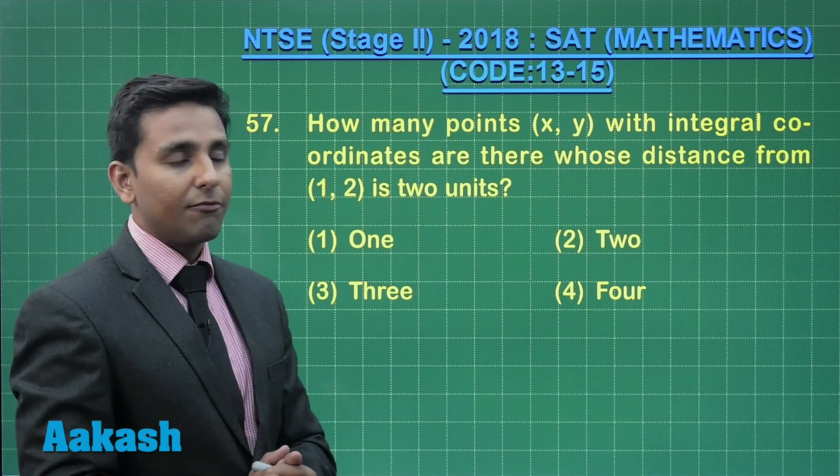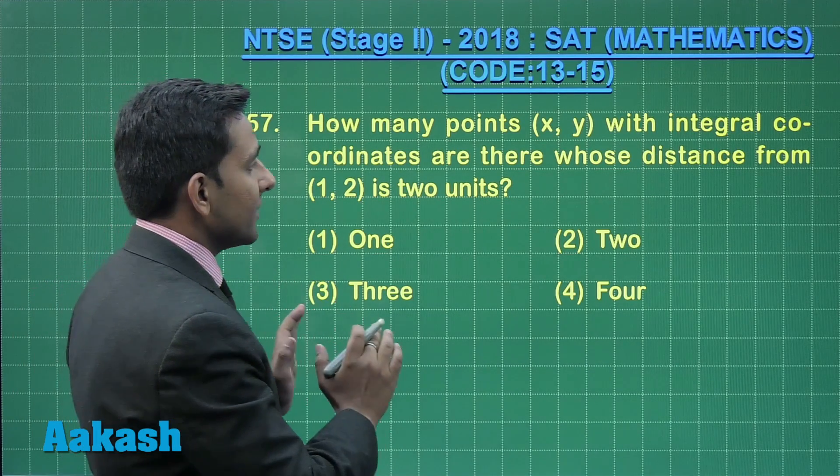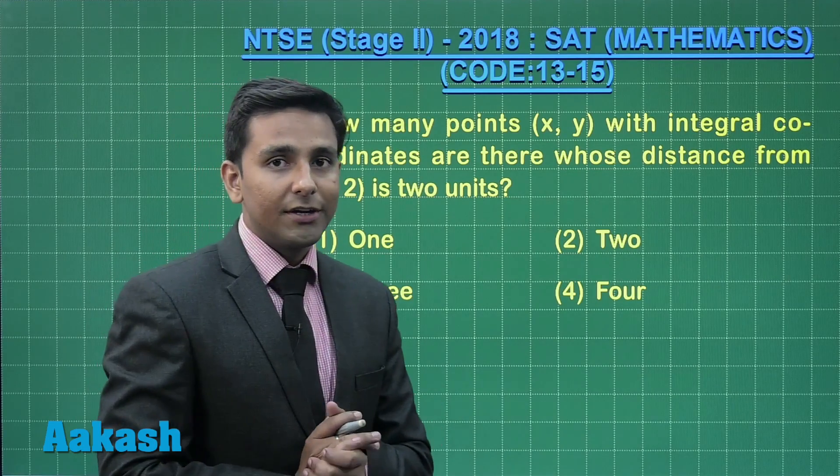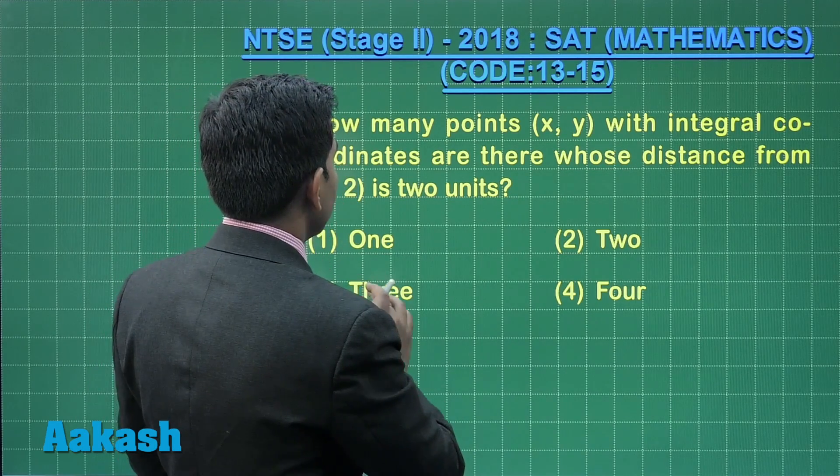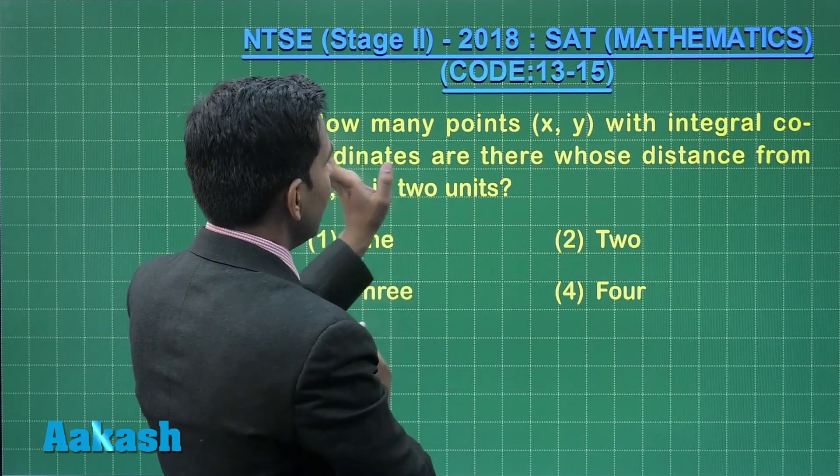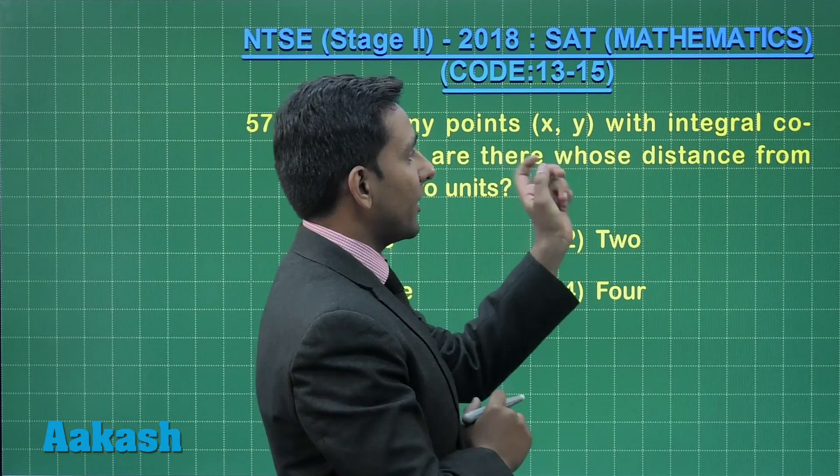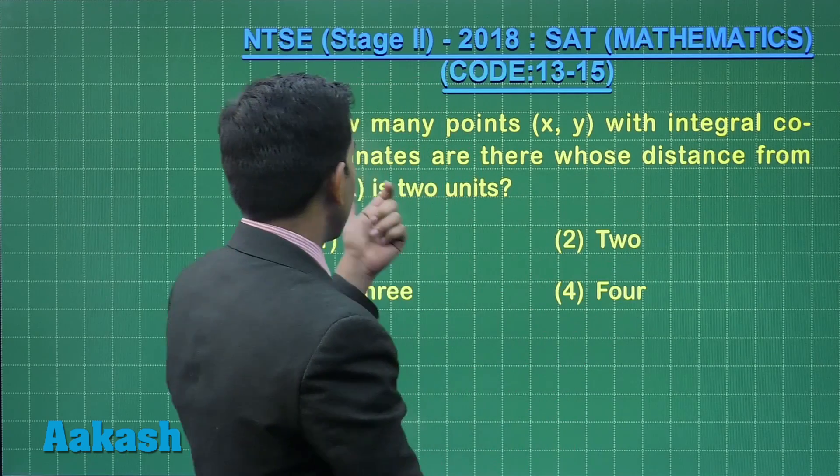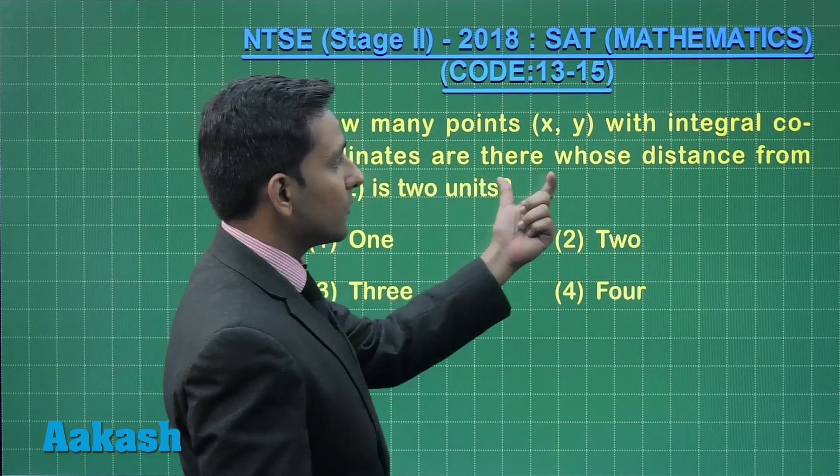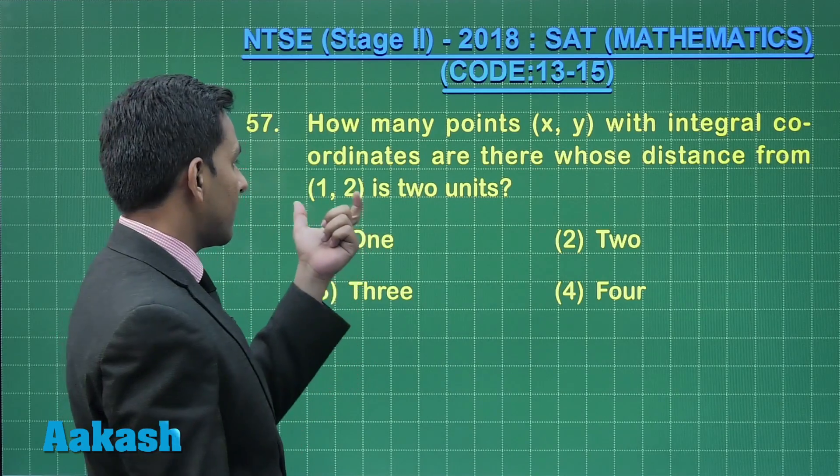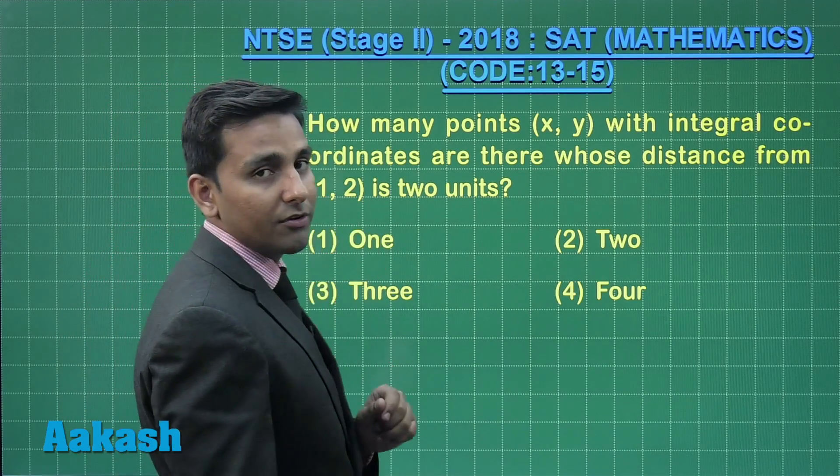Now let us take question number 57. This question belongs to coordinate geometry. The question states: how many points (x, y) with integral coordinates are there whose distance from the point (1, 2) is 2 units?